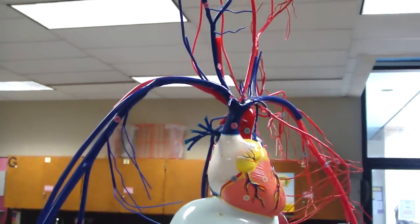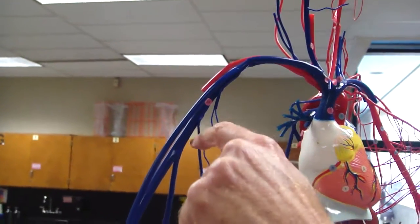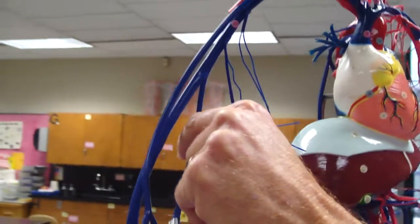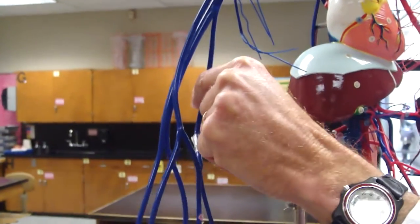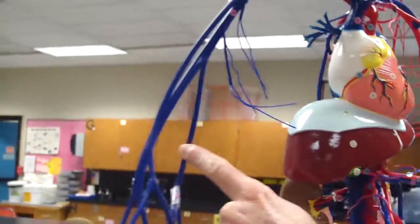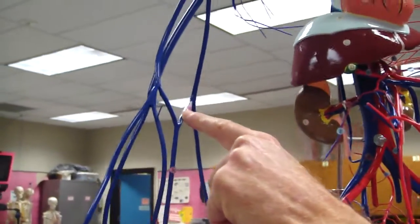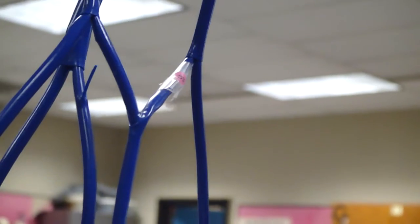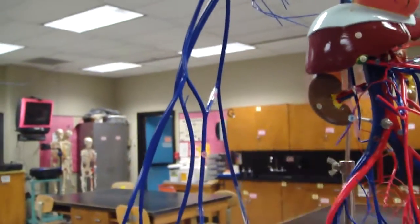The other part that's a little tricky is you have subclavian, and then you have basilic. This is basilic that comes here. Important because off of basilic is median cubital. That's where you draw blood from. That shows up for sure. Got to know that, because that's what you're looking for when you draw blood. Median cubital vein, which comes off of basilic.